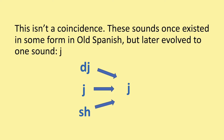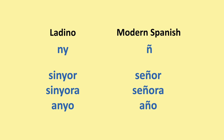Letters and combinations you won't find: In Ladino there's no eñe — the N with a tilde on top as in modern Spanish. For this sound in Ladino, you would write NY. For example, 'senyor' instead of 'señor', 'senyora' instead of 'señora', 'anyo' instead of 'año'. They all mean the same thing.